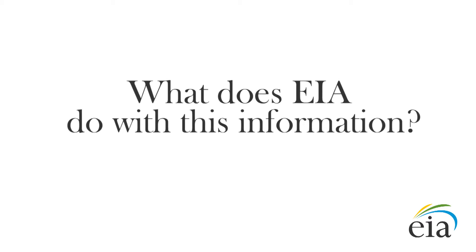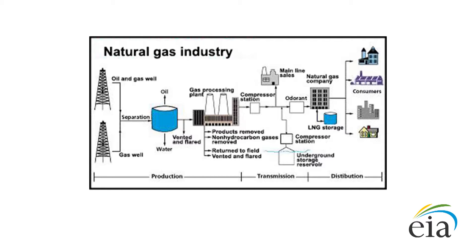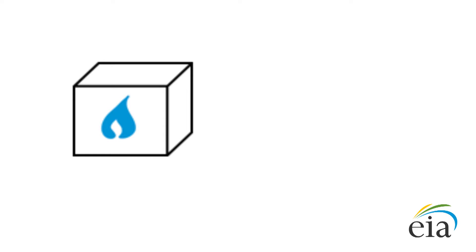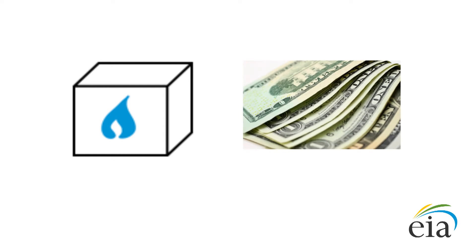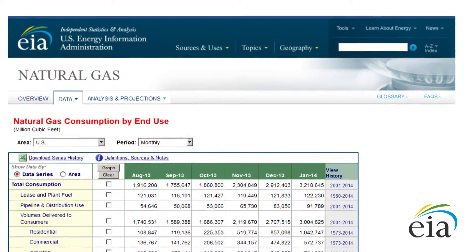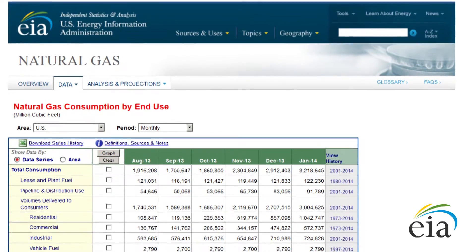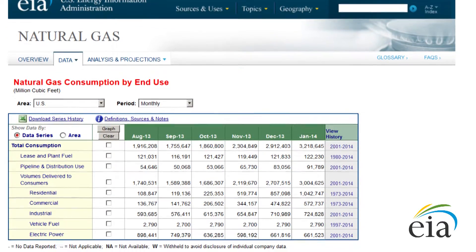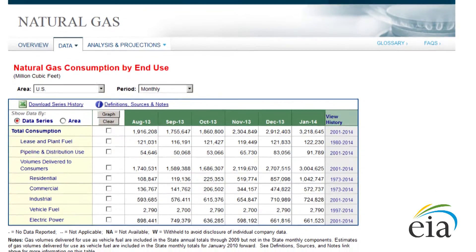What does EIA do with this information? EIA tracks the life cycle of natural gas from its reserves and production to consumption and prices. When you fill out the EIA-857, you're reporting what quantities of natural gas are being delivered to various consuming sectors. You're also reporting the revenue associated with those deliveries. EIA groups these data together by state and publishes the data by consuming sector on EIA's website. EIA also uses data from EIA-857 to calculate the United States' total natural gas consumption.